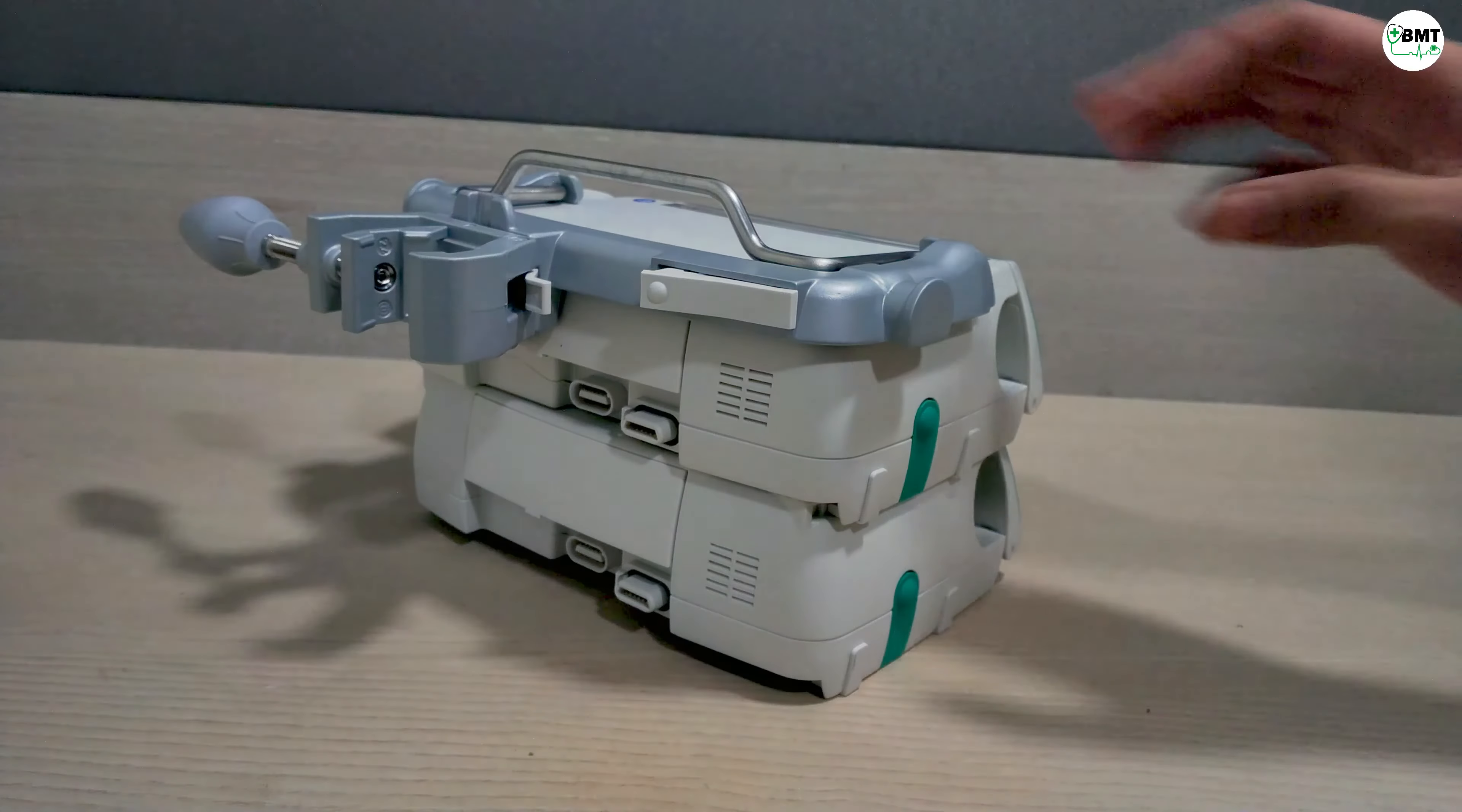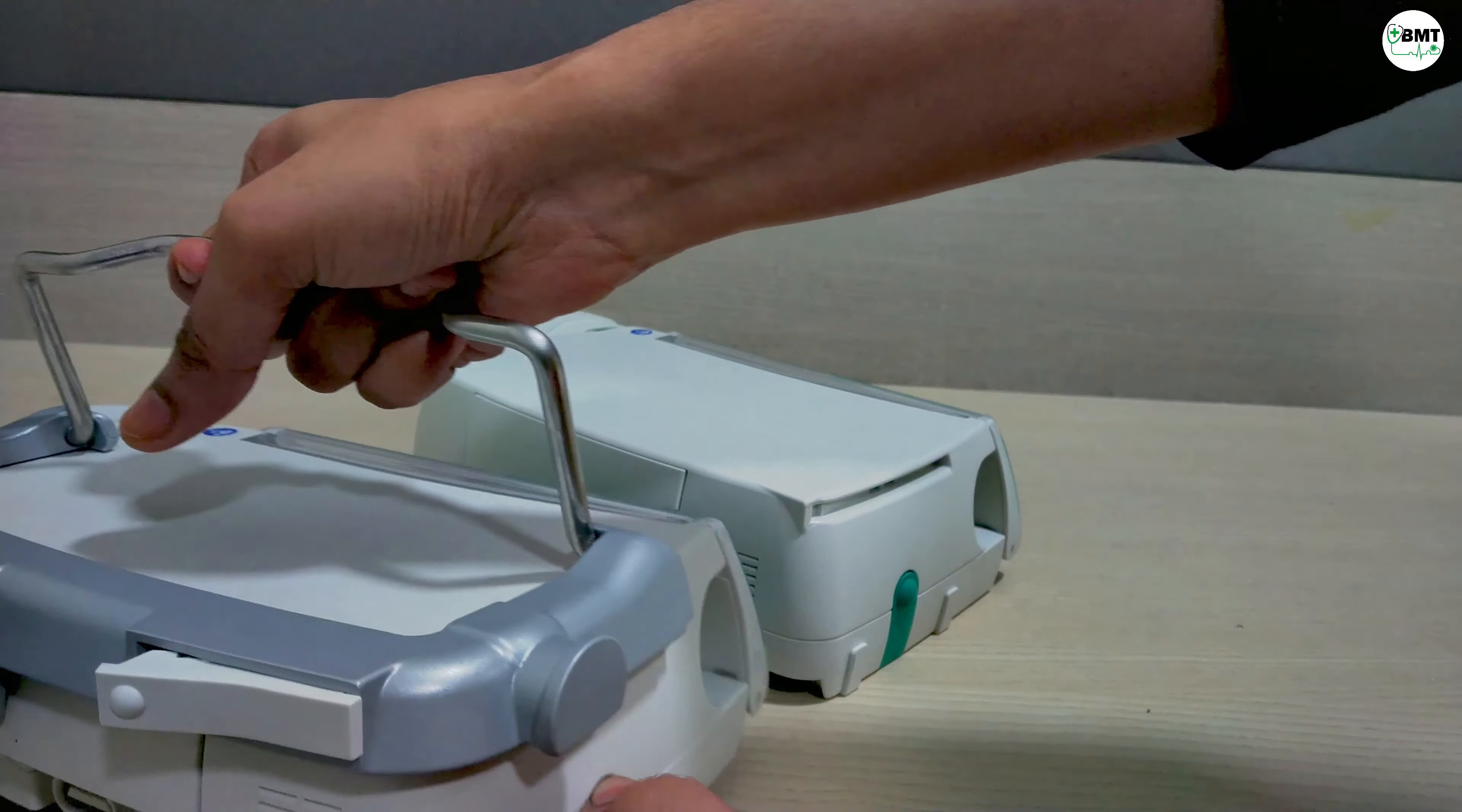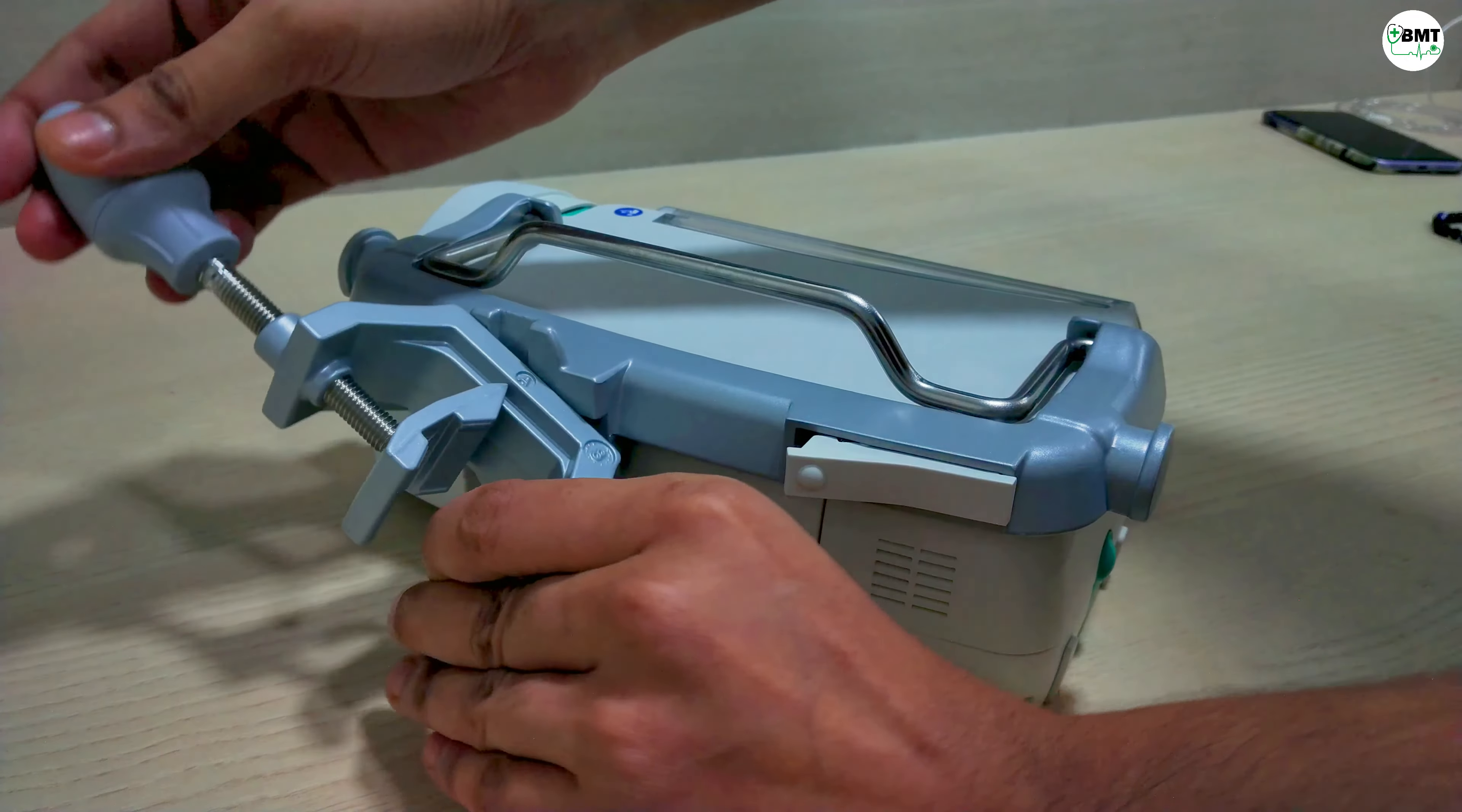For disconnecting this, this green button, press and disconnect. For rotating this clamp, here one knob is there. Press and disconnect.